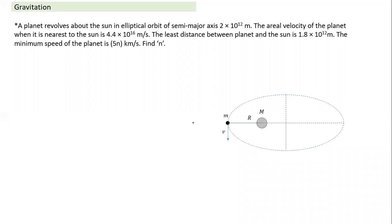Good morning everyone. We were at the topic of gravitation. If you recall last time, we were going through elliptical orbit based on Kepler's law. Let's take up one more question on elliptical orbit and see if we recall — in case of elliptical orbit, what are the points related to it whenever an object goes into elliptical orbit. Two equations or two conditions are valid.